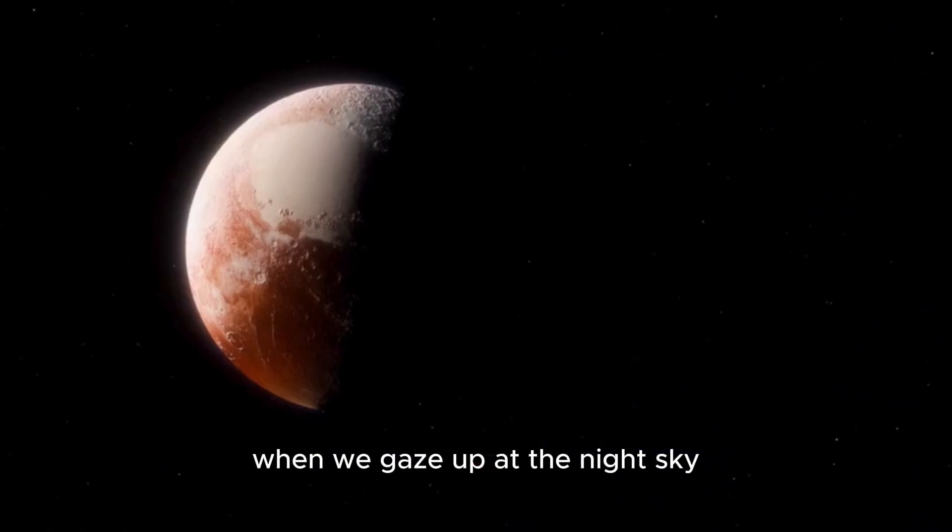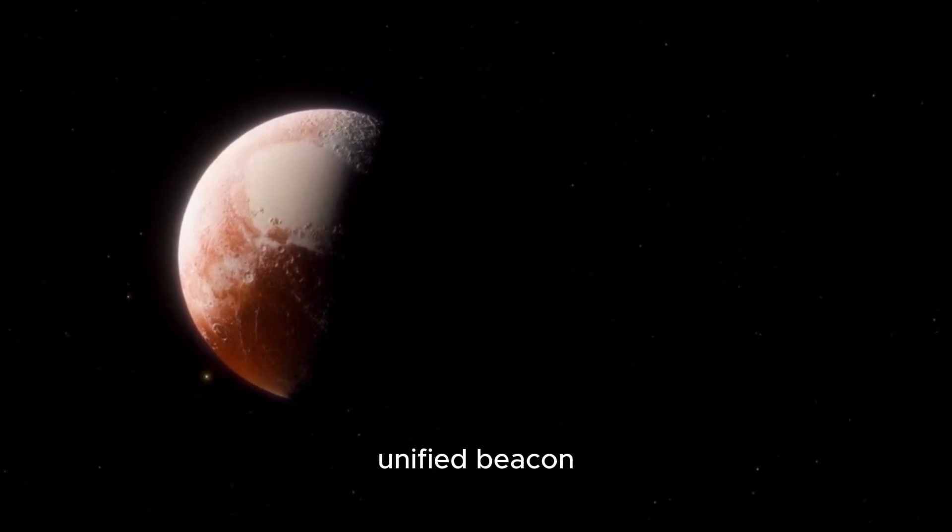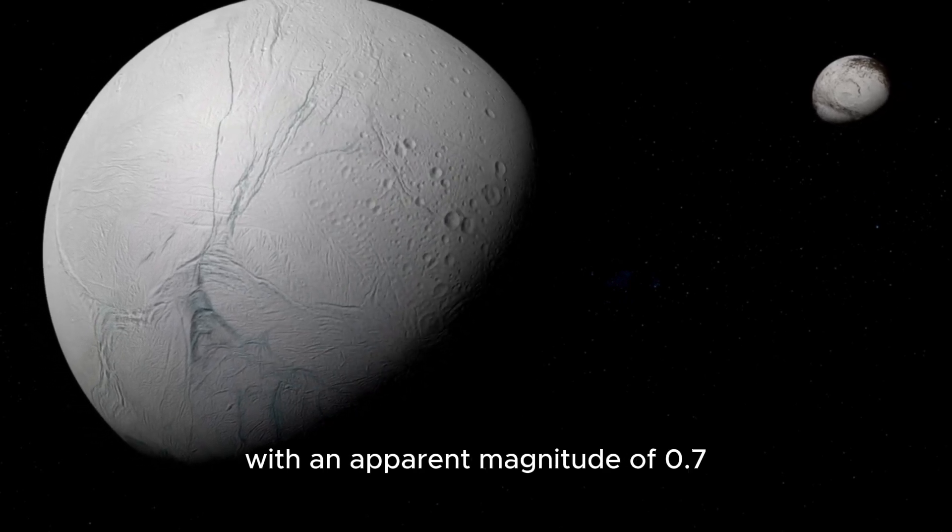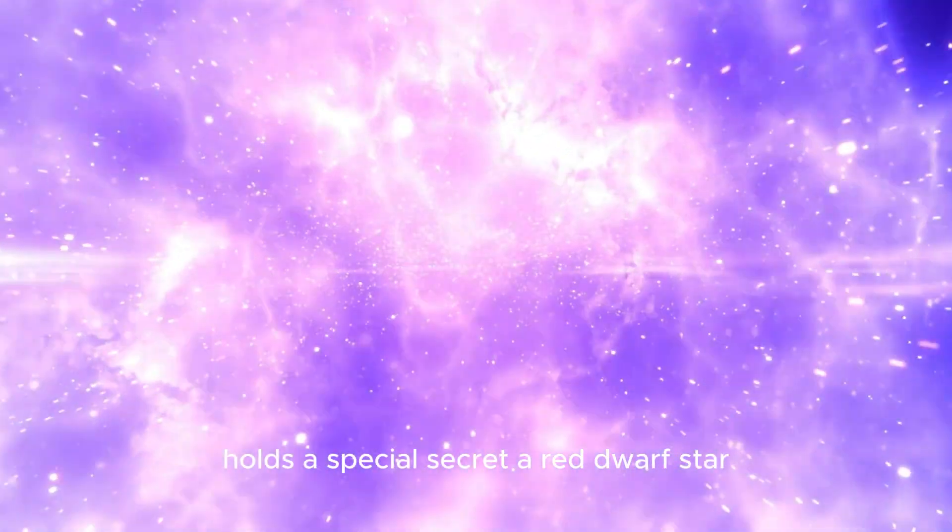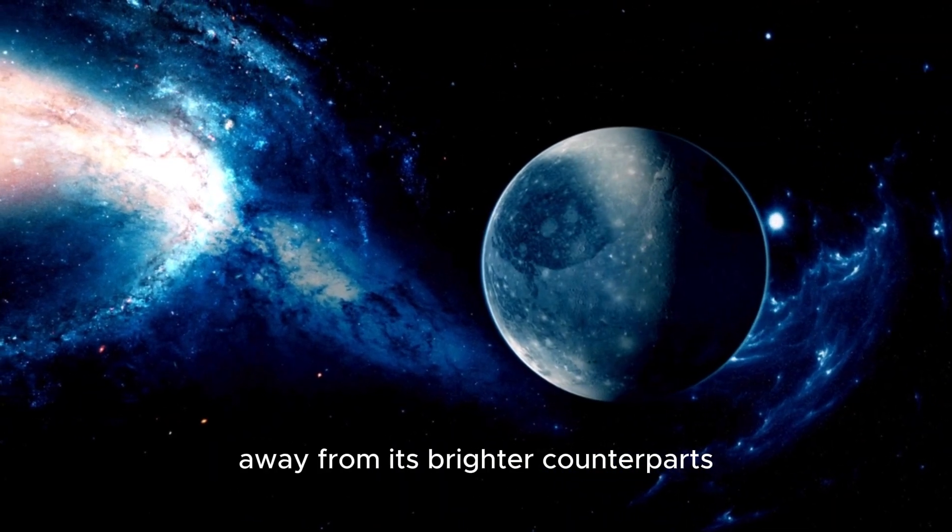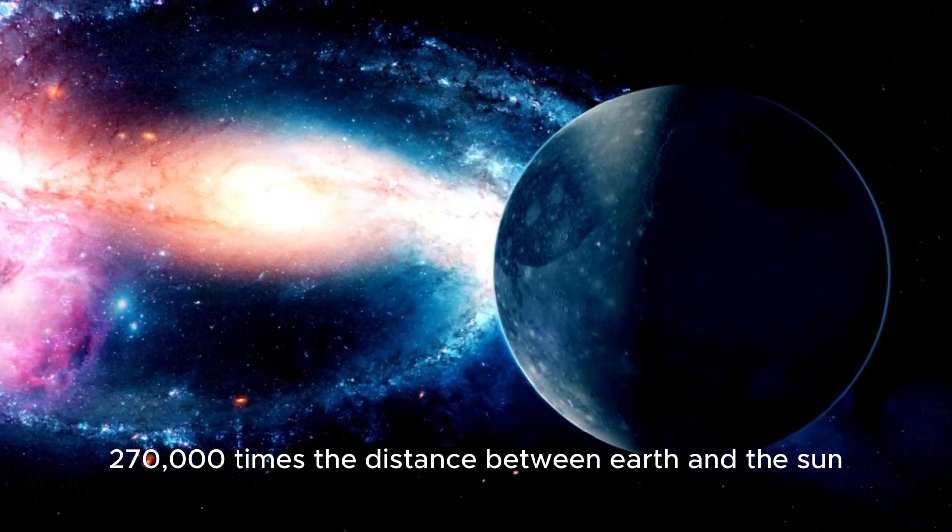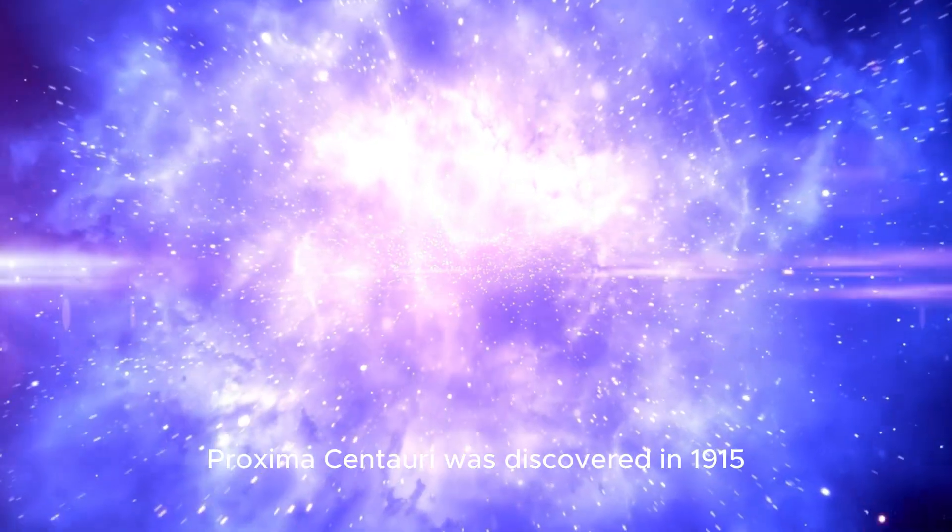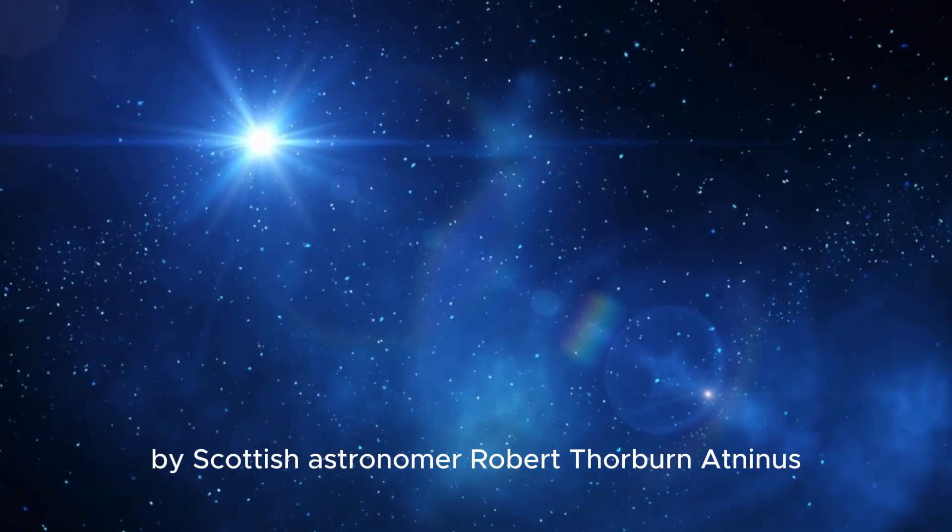When we gaze up at the night sky, Alpha Centauri a and b appear as a bright, unified beacon, claiming the title of the third brightest star, with an apparent magnitude of 0.7. Yet, our cosmic neighbor Proxima Centauri holds a special secret: a red dwarf star that sits just 4.2 light years away from its brighter counterparts, approximately 270,000 times the distance between Earth and the Sun. Known as the nearest star of Centaurus, Proxima Centauri was discovered in 1915 by Scottish astronomer Robert Thorburn Aiton Innes.